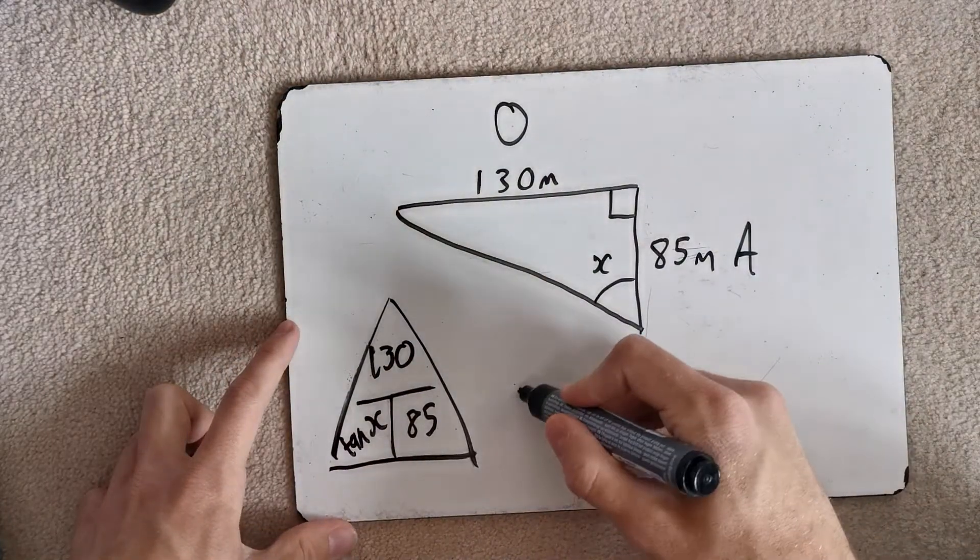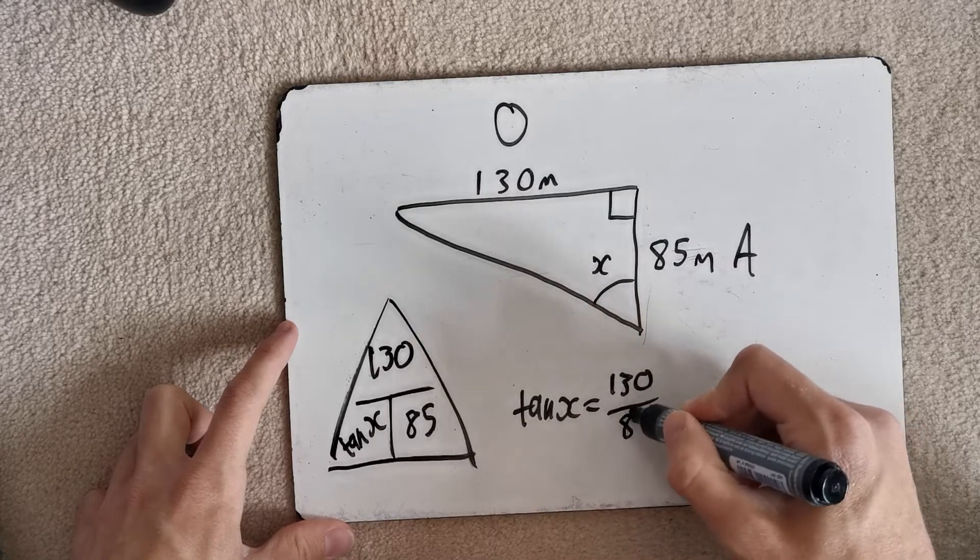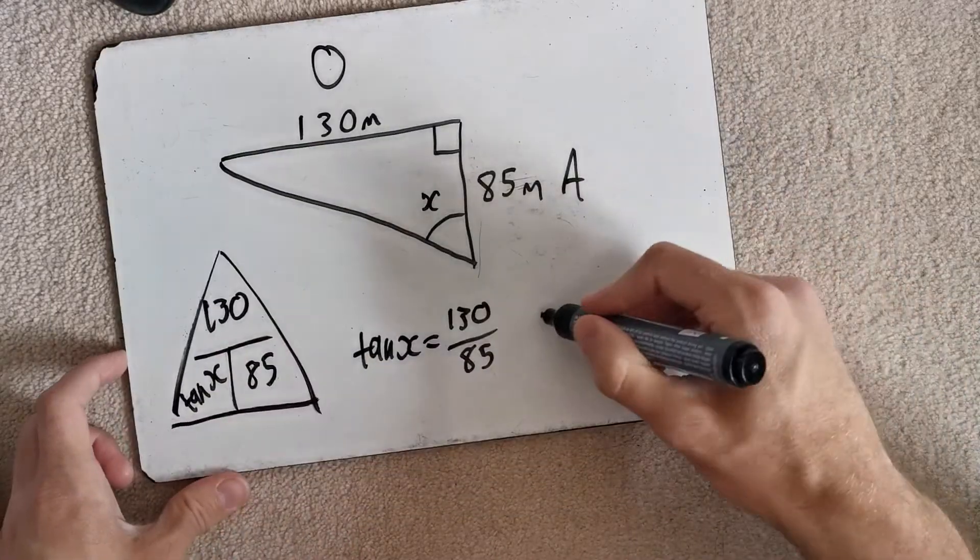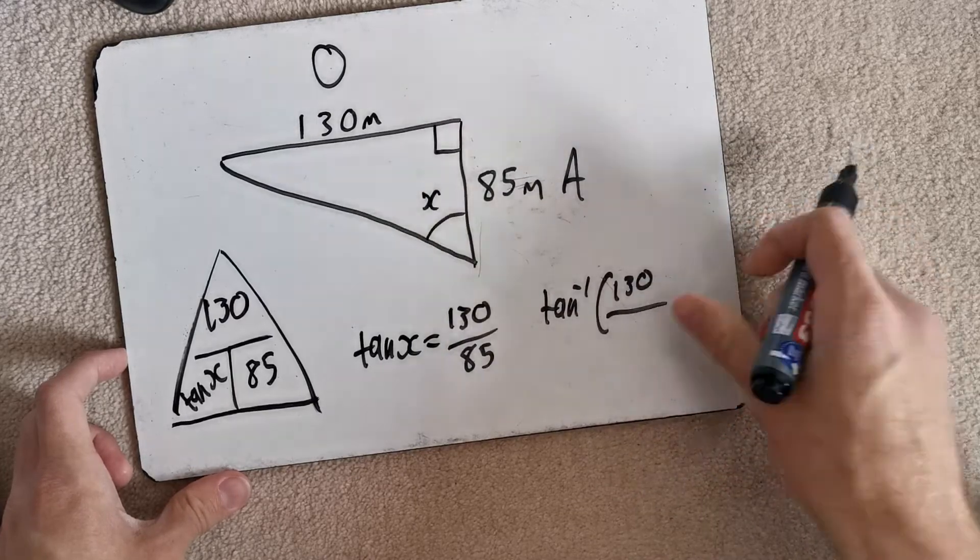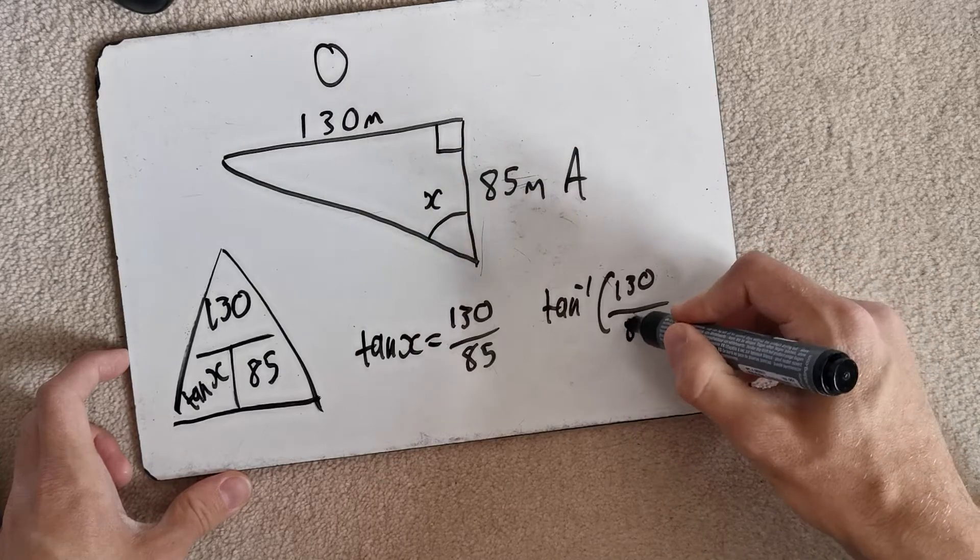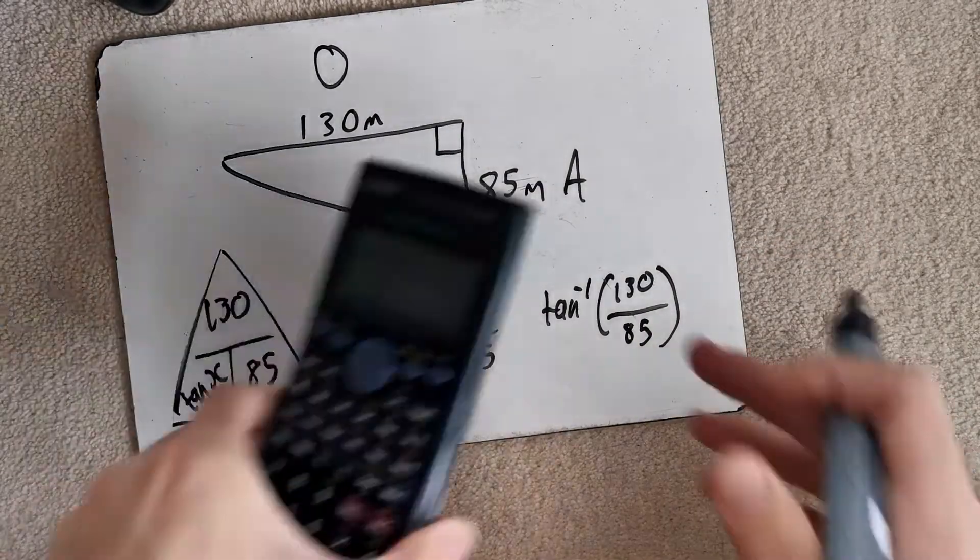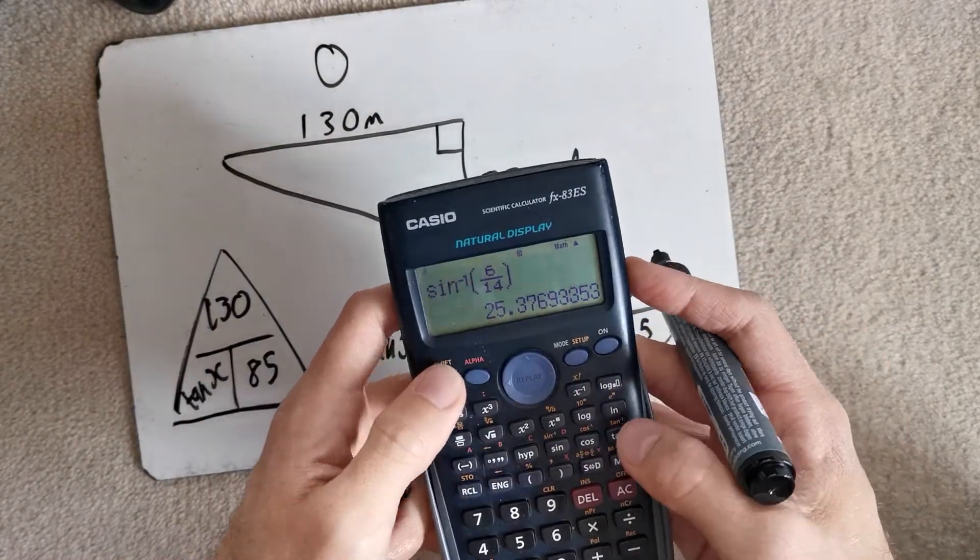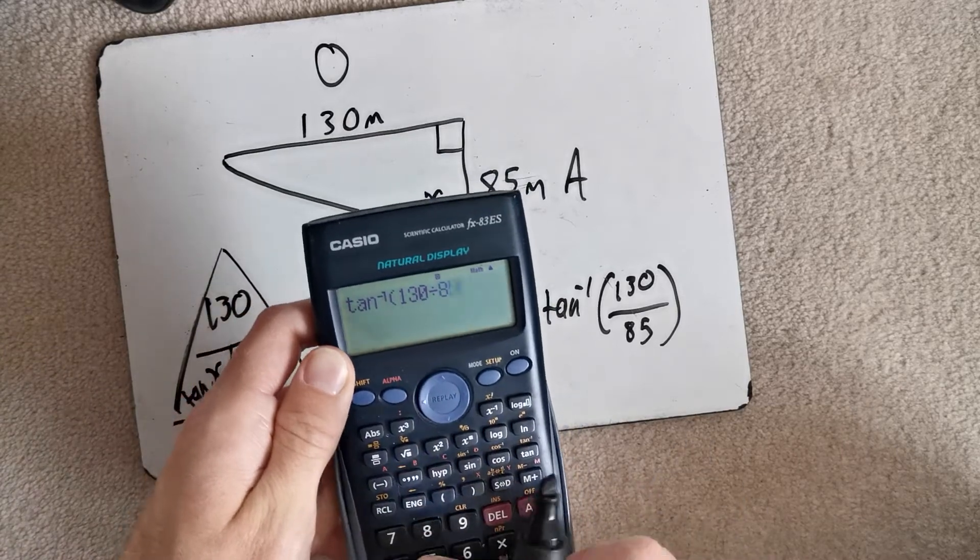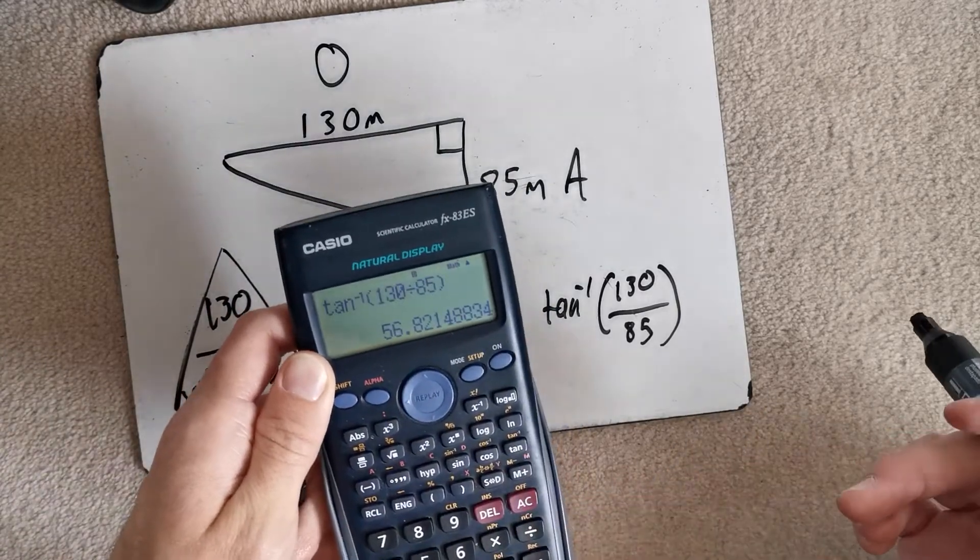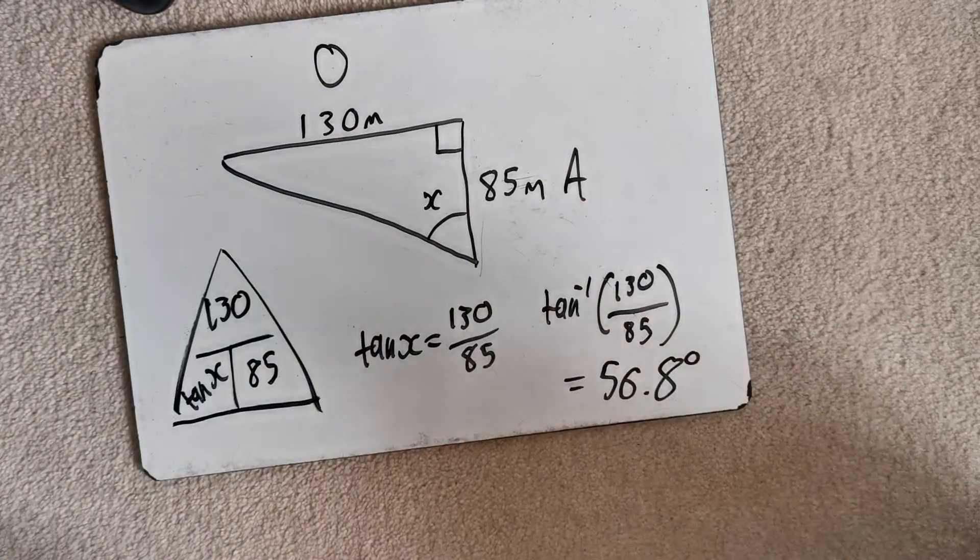So tan X equals 130 divided by 85. So we've got to use shift tan of 130 over 85. Shift tan of 130 divided by 85 comes out as 56.8 degrees. That's how to find the angles.